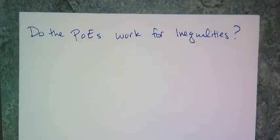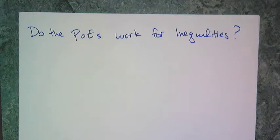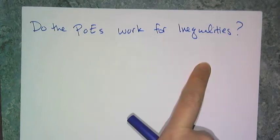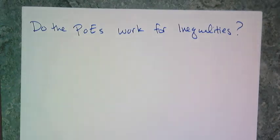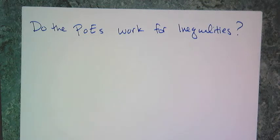When solving an inequality, you really want the inequality to work just like an equation. The question is, do the properties work for inequalities? Meaning, can I add, subtract, multiply, or divide both sides of the inequality by some number and it still be true? If we have properties of equality equivalent for inequalities, we can solve them just like an equation, and the only thing different is going to be the way the solution looks.